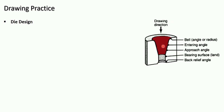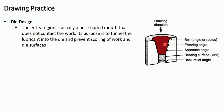Now let us see die design. This is the picture of the draw die showing the various terms used. The first region is the entry region, which is usually bell shaped. This bell-shaped mouth does not contact the work. When the workpiece is fed into the draw die, feeding is done through this entry region but there is no contact between the work and the surface of the entry region. The purpose of the entry region is to funnel the lubricant into the die and prevent scoring of work and die surfaces.